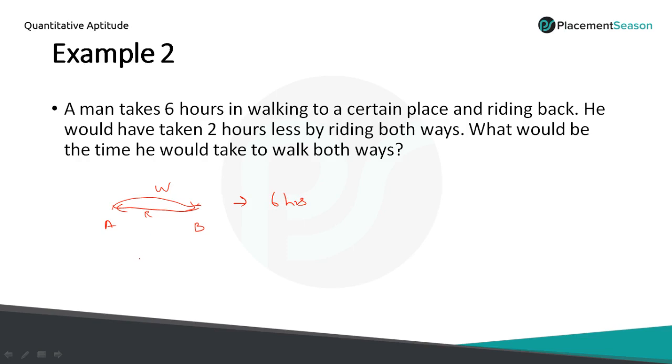Similarly he would have taken 2 hours less, that is 4 hours. 2 hours less means 6 minus 2, it is 4, by riding both ways. So AB is the same point. He is riding from A to B and again riding back from B to A. So in this scenario he is taking 4 hours. So what is our question?